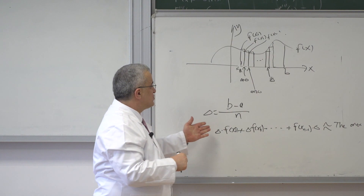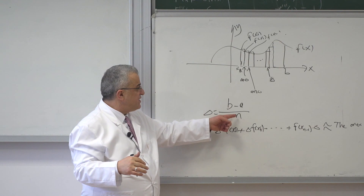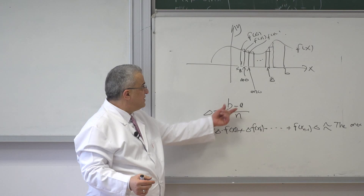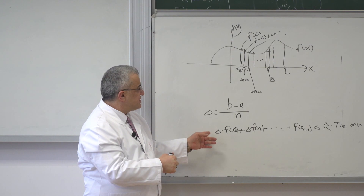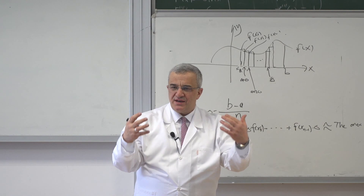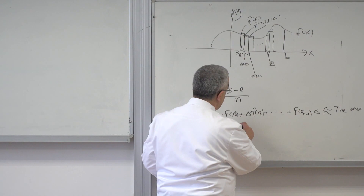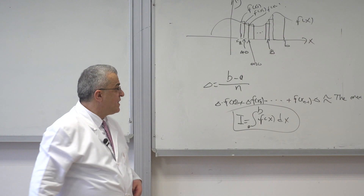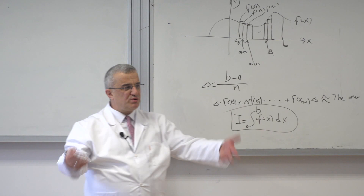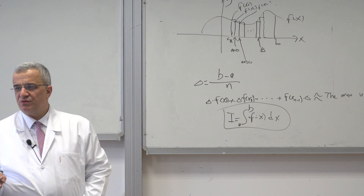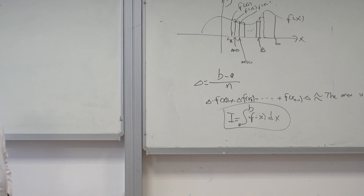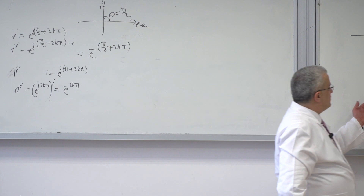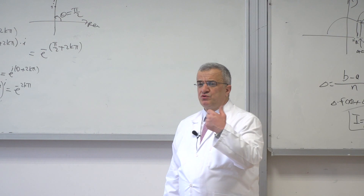When you make n larger and larger — when n goes to infinity, meaning when the subinterval width goes to zero — this error goes to zero, and this becomes the exact value. We call that the Riemann integral: integral from a to b of f(x) dx. This is also one of the most basic methods we use in numerical methods — a way to numerically compute an integral. For example, if f(x) = sin(x²), there is no antiderivative we know of, so you use numerical methods.